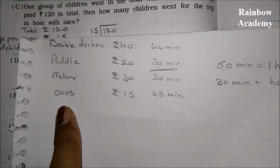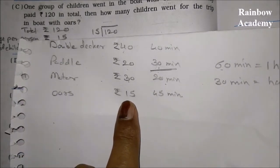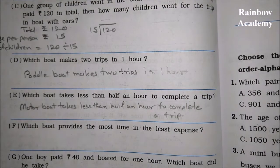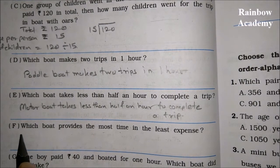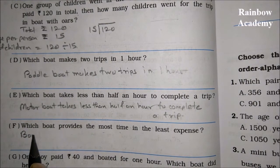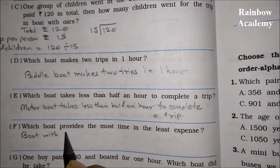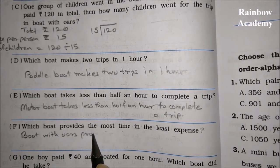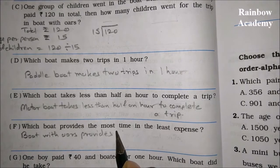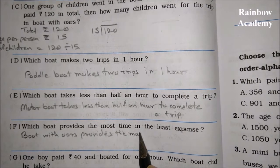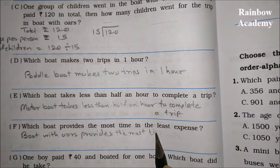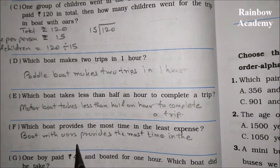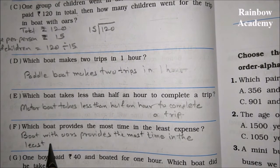Question F: Which boat provides the most time at the least expense? The boat with oars costs only 15 rupees per person and gives 45 minutes of trip time. So the boat with oars provides the most time at the least expense.